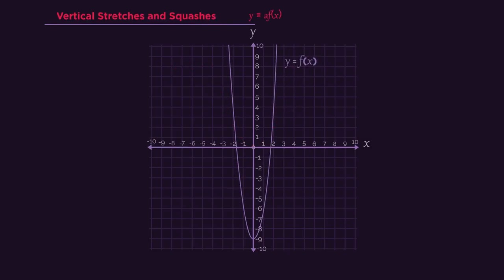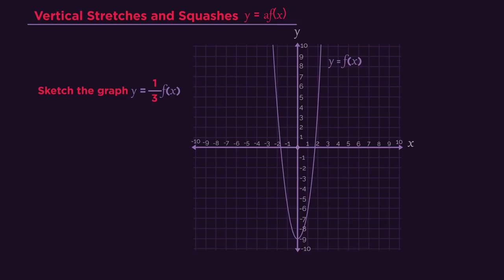If you have to transform a graph yourself, just take it point by point. So we have the graph of y equals f of x, and we need y equals a third f of x. So we divide each y-coordinate by 3.